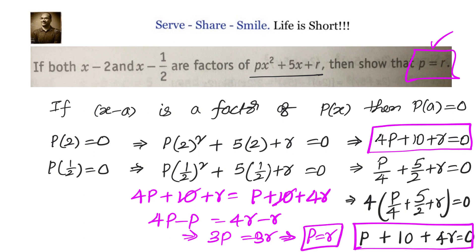Let us recap this NCERT exemplar problem for 9th grade polynomials. Given that x minus 2 and x minus 1/2 are both factors of px squared plus 5x plus r, the factor theorem tells us p(2) equals 0 and p(1/2) equals 0. Substituting gives equations 4p plus 10 plus r equals 0 and p plus 10 plus 4r equals 0. Equating both, we proved that p equals r.